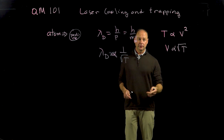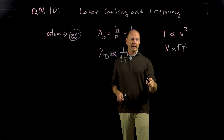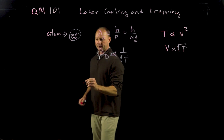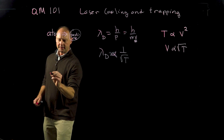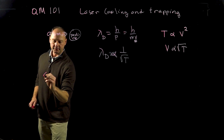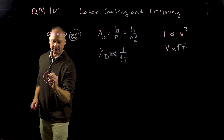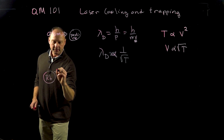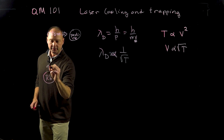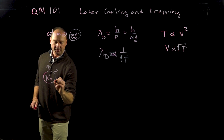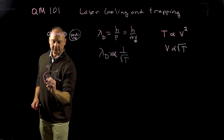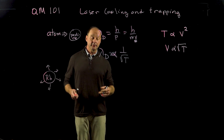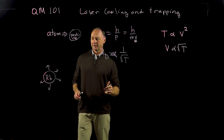So the trick in the lab is: how do you get low temperature? Here's what I do — I use rubidium atoms. The rubidium atoms are jiggling around at room temperature with a certain velocity, and then what I do is I use lasers.